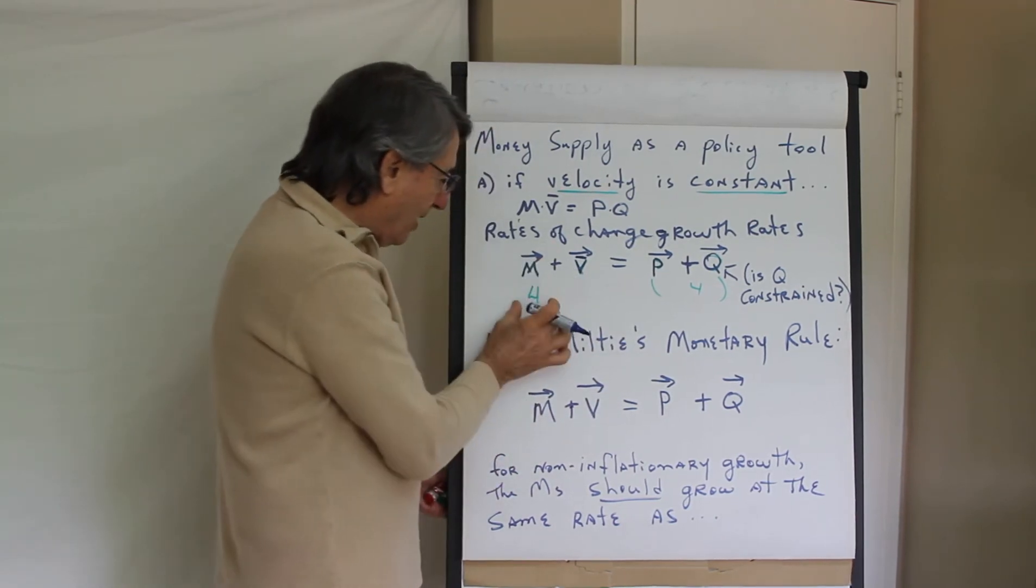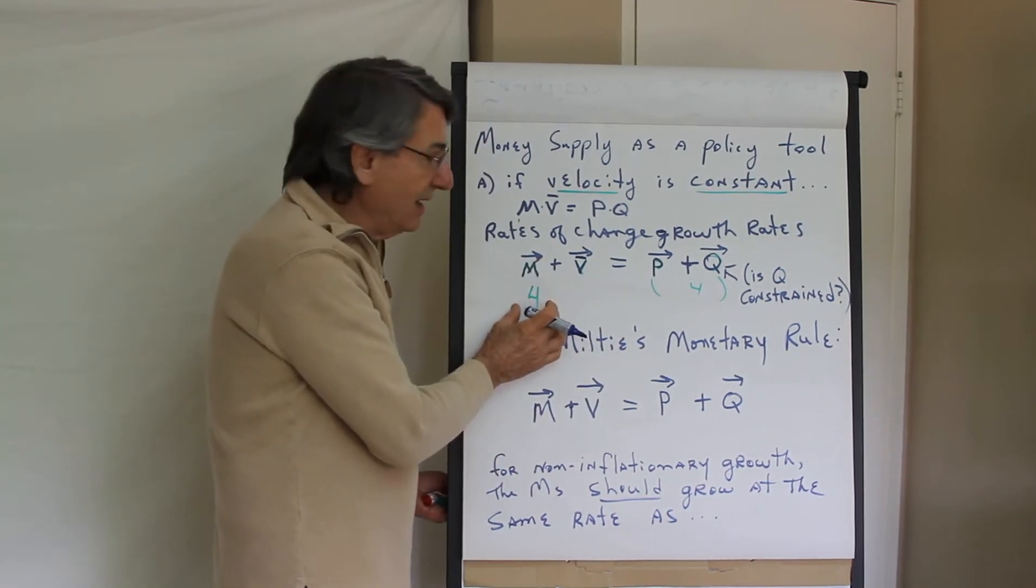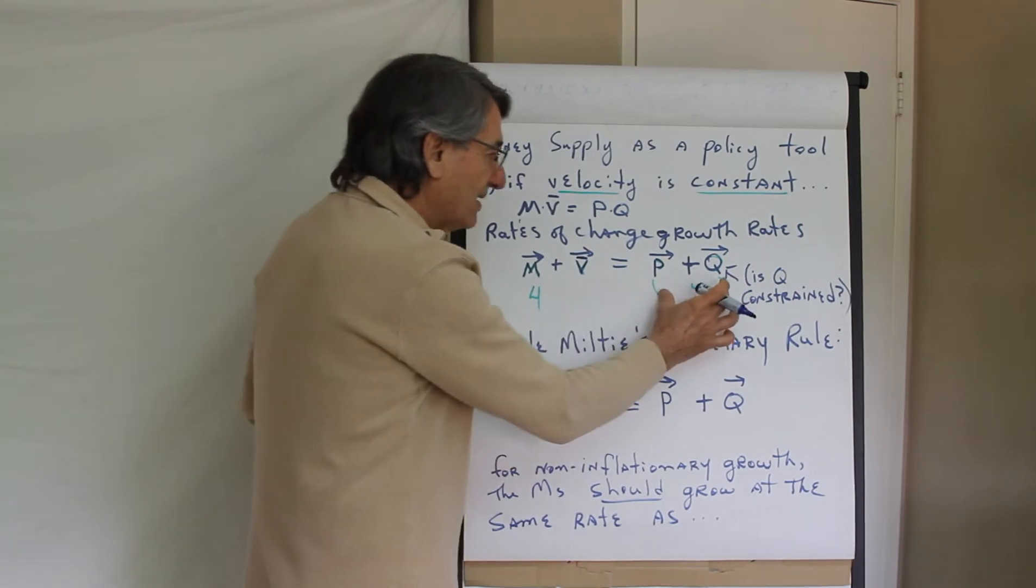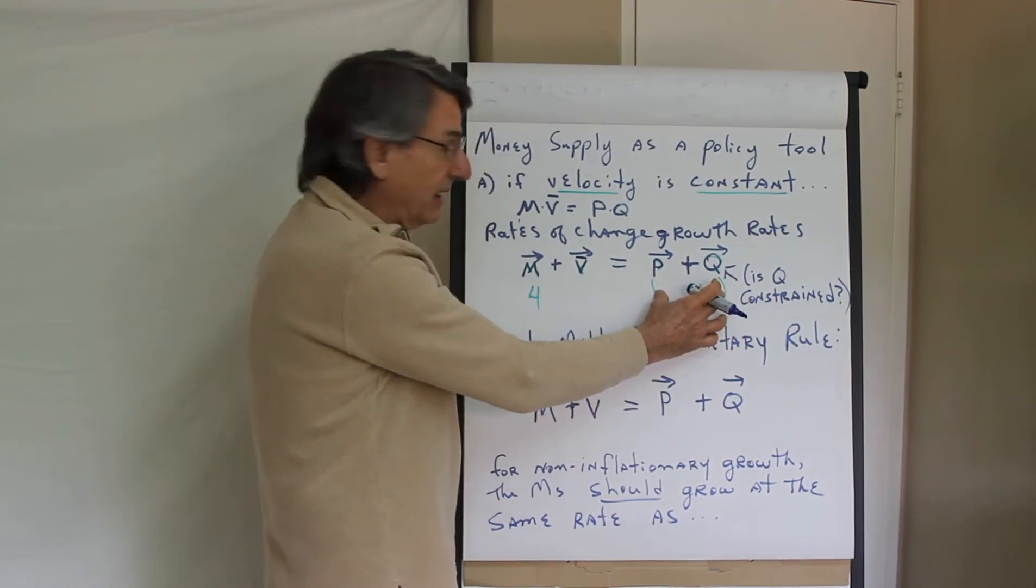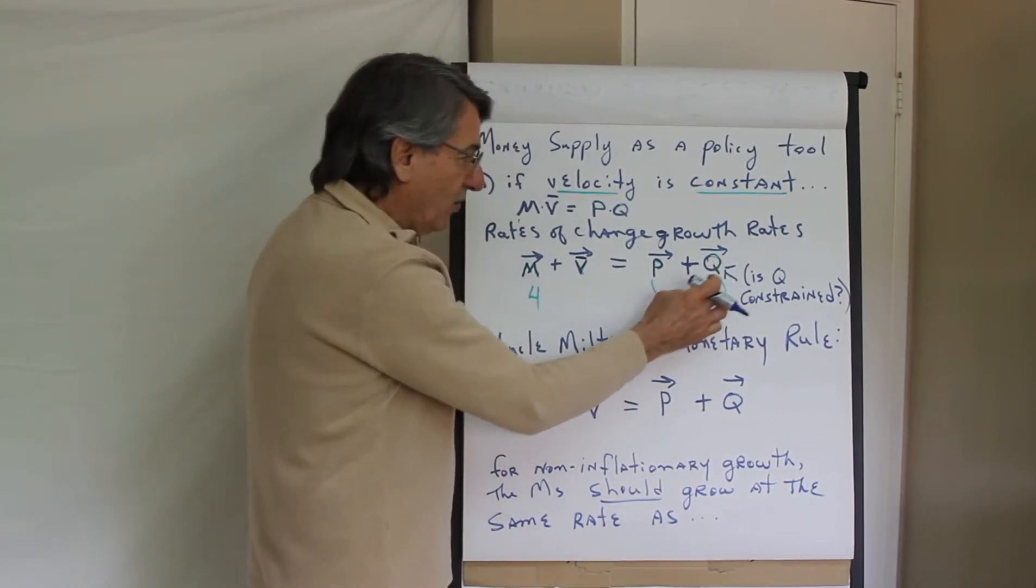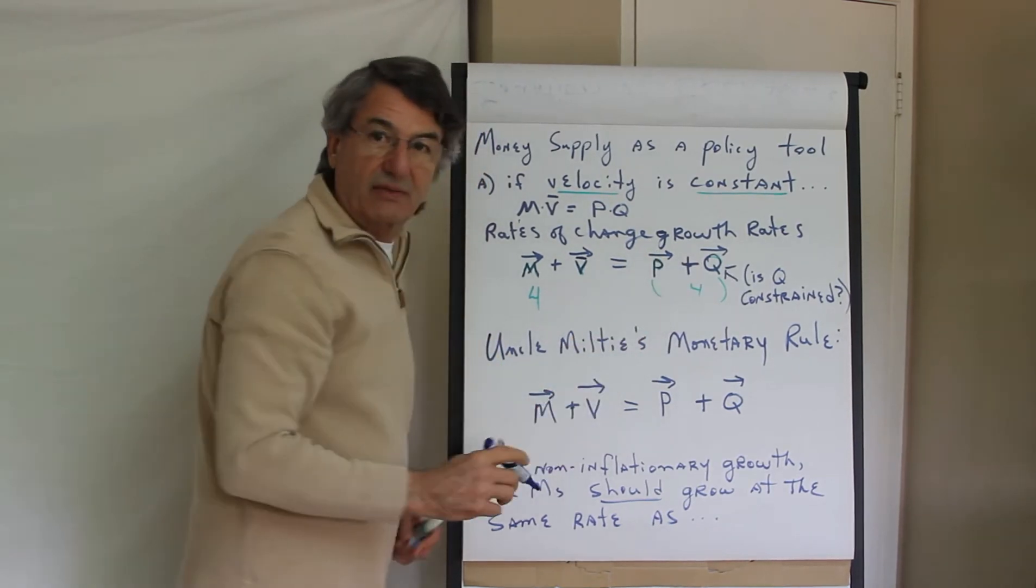If you're going to talk about how monetary policy should be conducted, the money supply should grow and its effect ideally would be on the quantity. You want quantity increases, not price level increases.